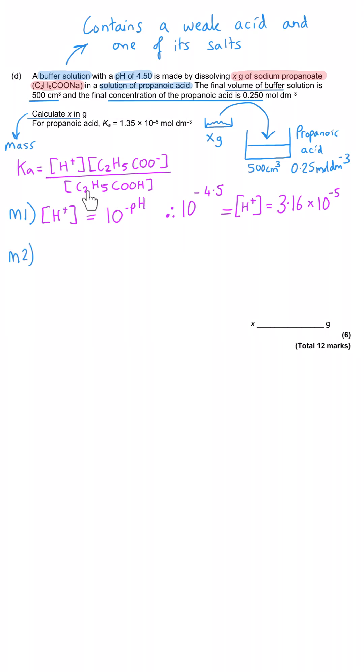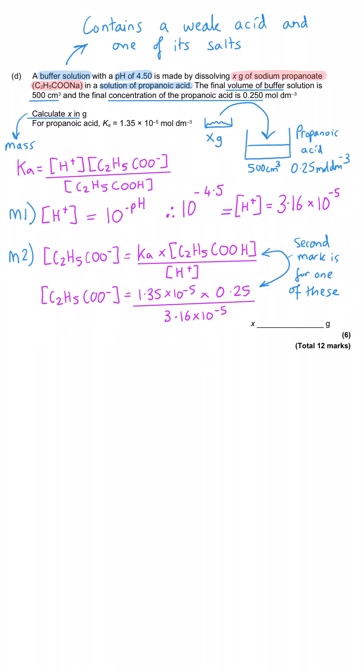We've been told the propanoic acid concentration, we've been told the Ka, and we've now got the H plus concentration. So we can plug those numbers in, then rearrange them, and calculate our propanoate ion concentration. Or you could rearrange the expression first, and then calculate the propanoate ion concentration. Either way, you'll get a mark for the rearrangement of that expression, either with the numbers or without.